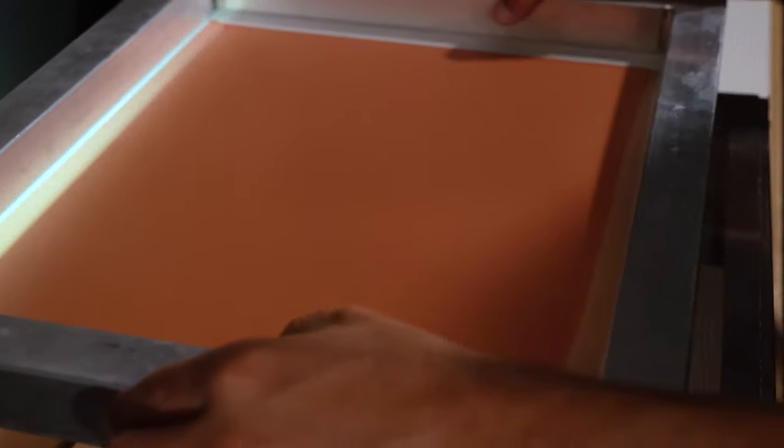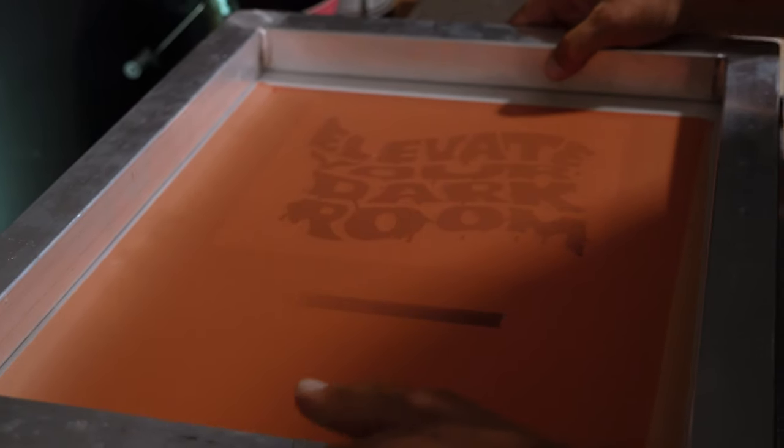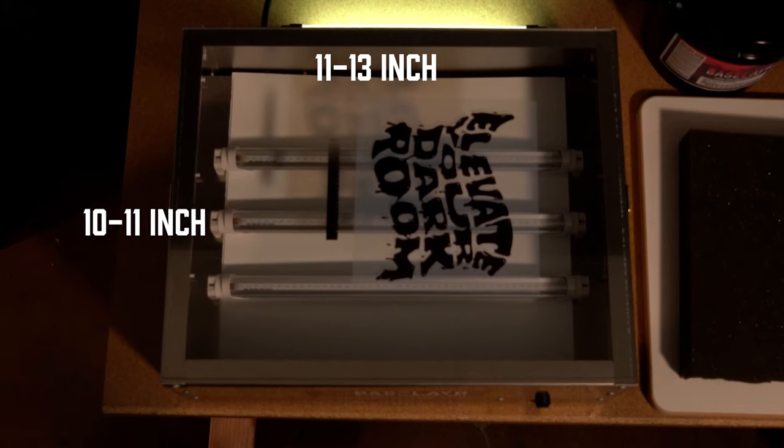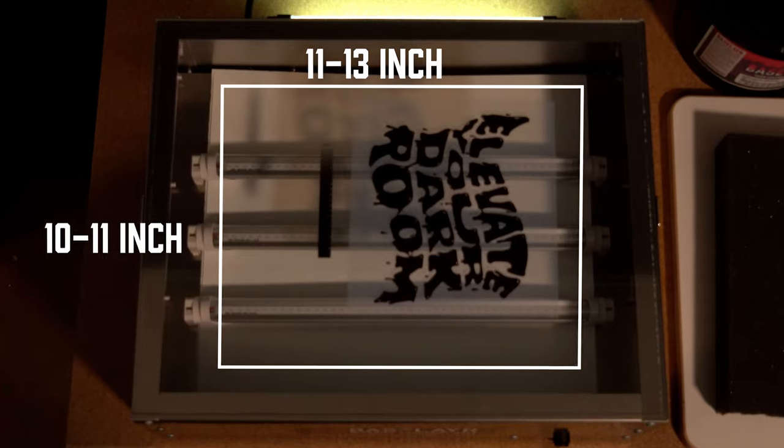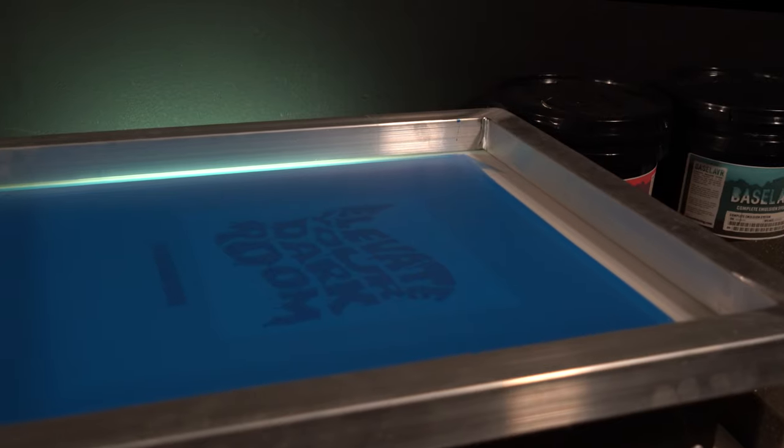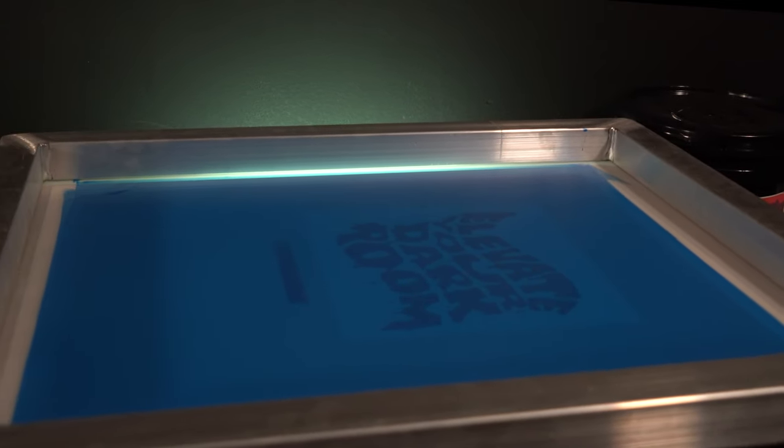First, place your film on your screen. Then place your screen on your exposure unit. If you're using a 20x24 screen, the sweet spot of the exposure unit is 10-11 inch by 11-13 inch tall. The sweet spot is going to be the same regardless of the screen size.